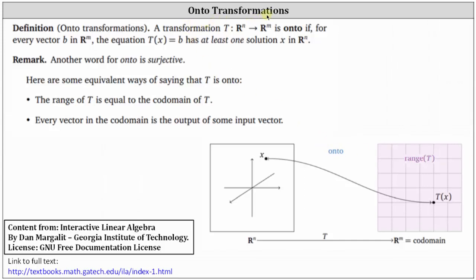Welcome to a lesson on onto transformations. A transformation T from R^n to R^m is onto if, for every vector b in R^m, the equation T(x) = b has at least one solution x in R^n. Or, more simply, for every output vector b in R^m, there must be at least one corresponding input vector x in R^n.